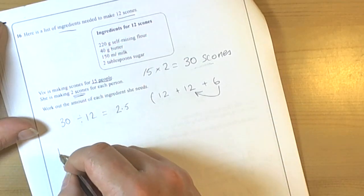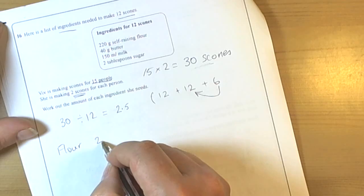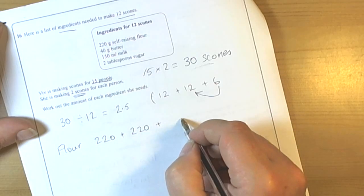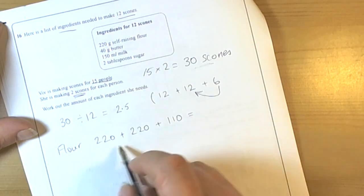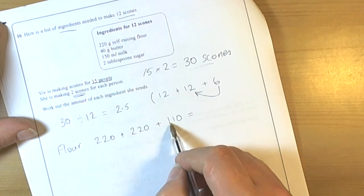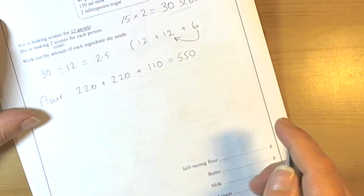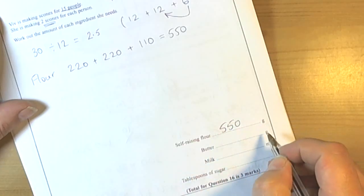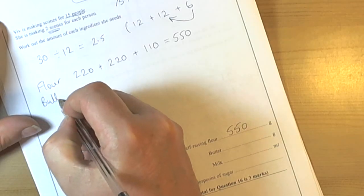So if we take the flour, one recipe of 12 needs 220, another one needs 220 again, but then we need half the recipe again, so we need 110. So if we add all those up: 220, 420, 440, 540, 550. So we can see then, just filling in the answer line, that we're going to need 550 grams of raising flour. And we do the same thing for the other ingredients.